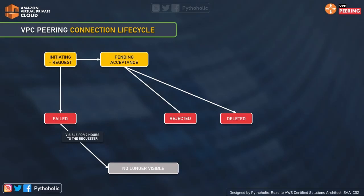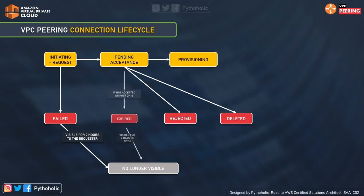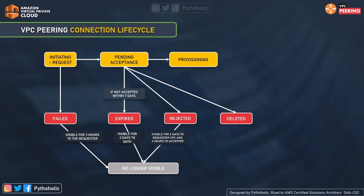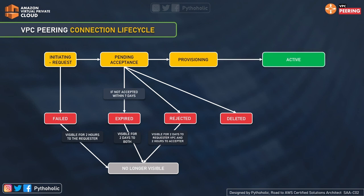The owner of the accepting VPC can either accept or reject the request. If it is accepted, it moves to the provisioning state. If no action is taken within seven days by the acceptor VPC, it gets expired, and the expired connection is visible for two days to both VPC owners. If the request is rejected, it moves to the rejected state. The rejected VPC peering connection remains visible to the requester VPC owner for two days and to the acceptor VPC owner for two hours. If the request was created within the same AWS account, the rejected request remains visible for two hours.